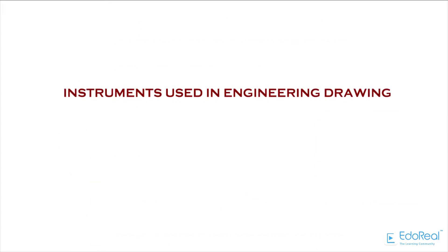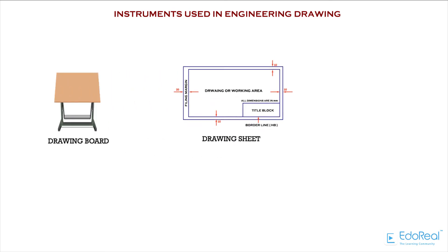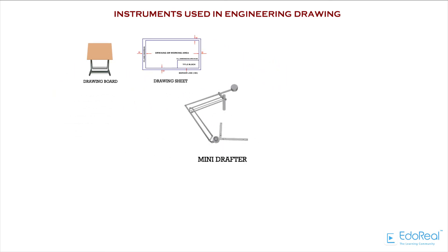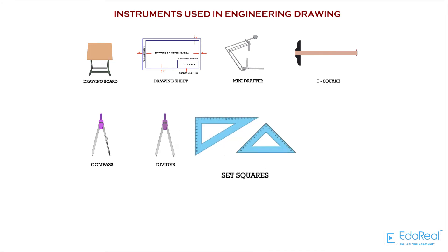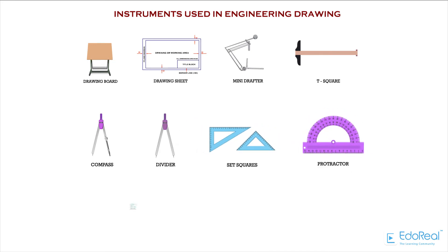Instruments used in engineering drawing: Drawing board, Drawing sheet, Mini drafter, T-square, Divider, Set squares, Protractor, French curves, Pencils, Eraser. Let us describe each and every drawing instrument in detail.